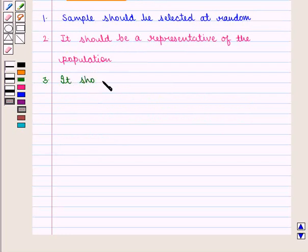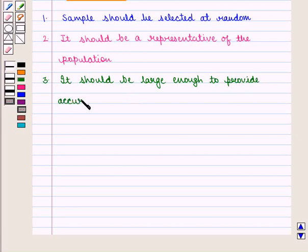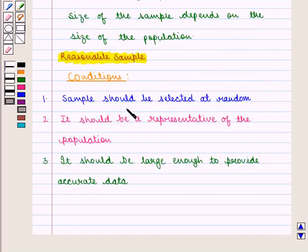Third, it should be large enough to provide accurate data. If the sample satisfies these three properties, then it is the best sample chosen from the population.